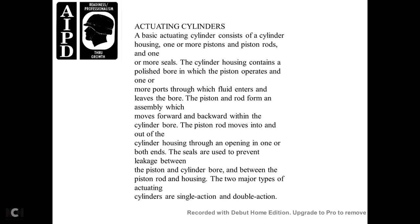Actuating Cylinders. An actuating cylinder consists of a cylinder housing with one or more pistons, the piston rod, and one or more seals. The cylinder housing contains a polished bore in which the piston operates, and one or more ports through which fluid enters and leaves. The piston and rod form an assembly that moves forward and backward within the cylinder bore. The piston rod extends out of the cylinder housing through an opening at one or both ends. Seals are used to prevent leakage between the piston and cylinder bore and between the piston rod and housing. The two major types of actuating cylinders are single-action and double-action.